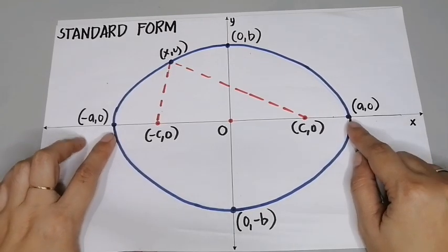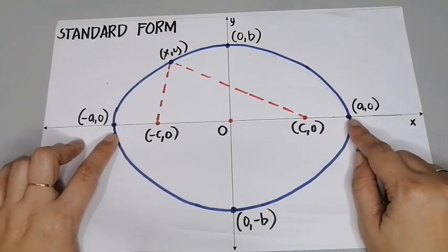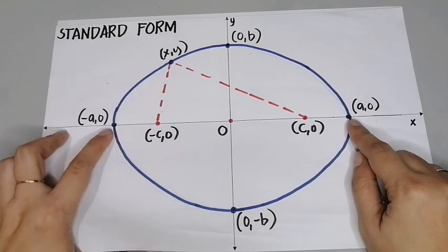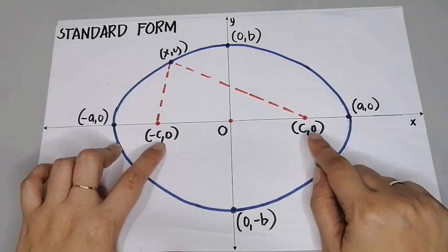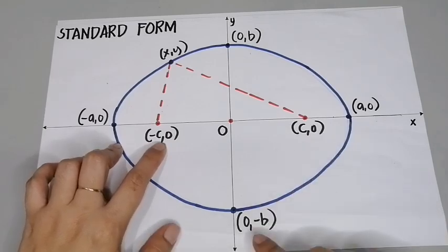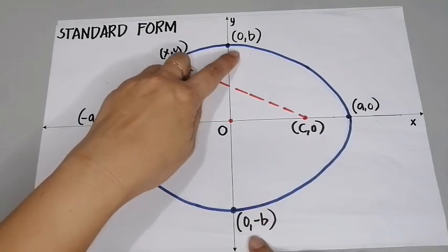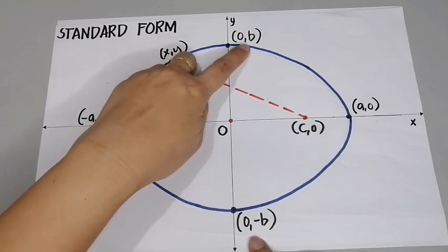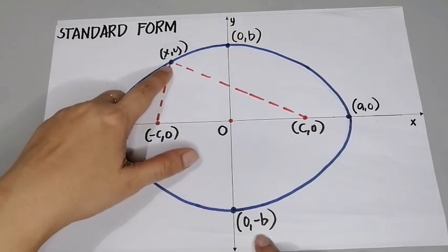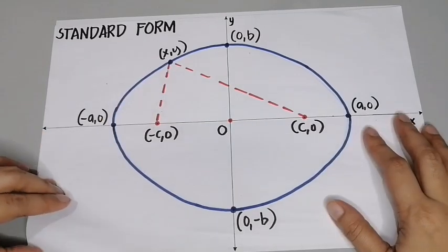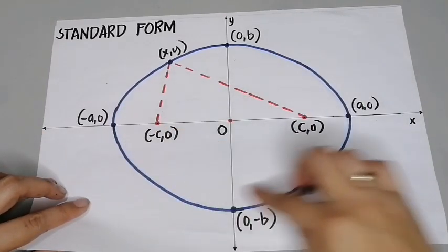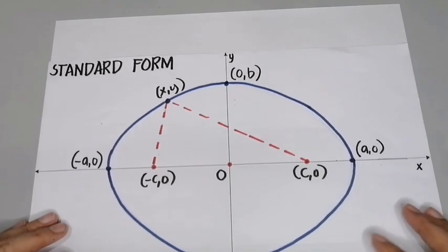Suppose we have here the vertices of this ellipse with coordinates negative a,0 and a,0. The foci have coordinates negative c,0 and c,0. The coordinates of the co-vertices are 0,b and 0,negative b. We also have a point on the ellipse with coordinates x,y. Let's try to find the standard form of an equation of this ellipse.